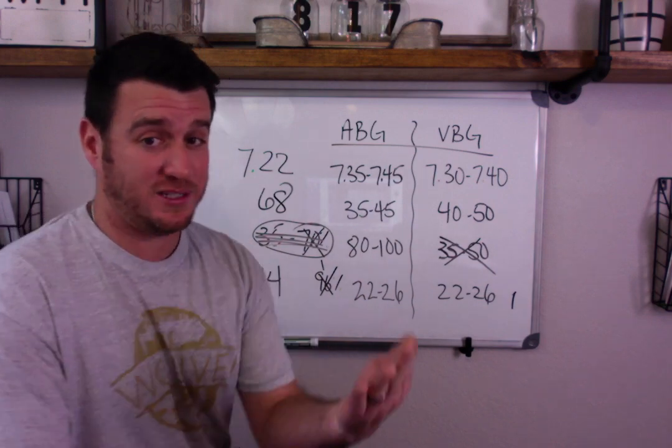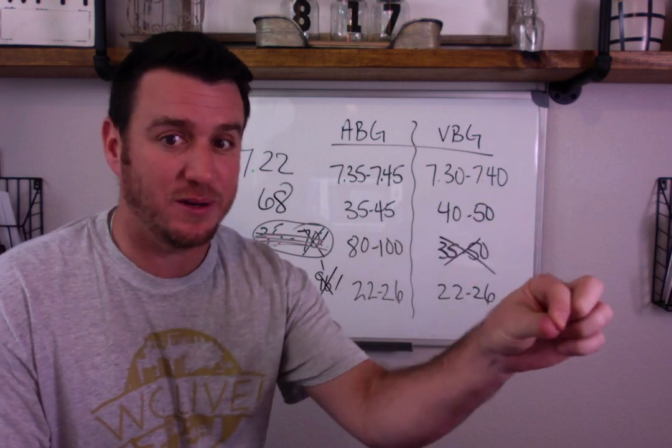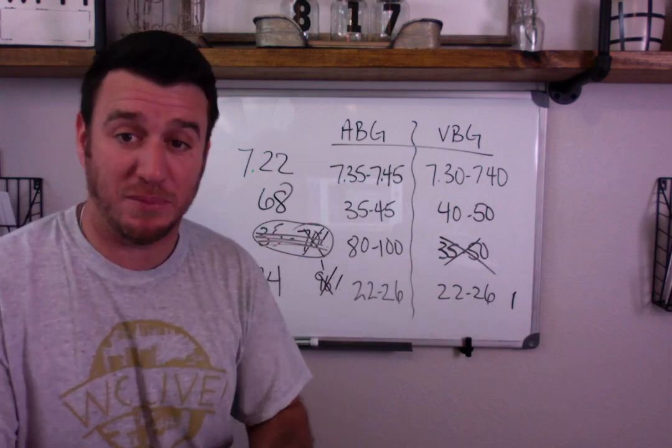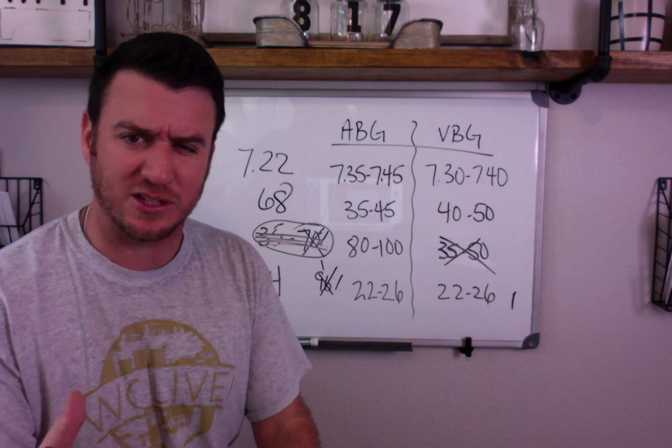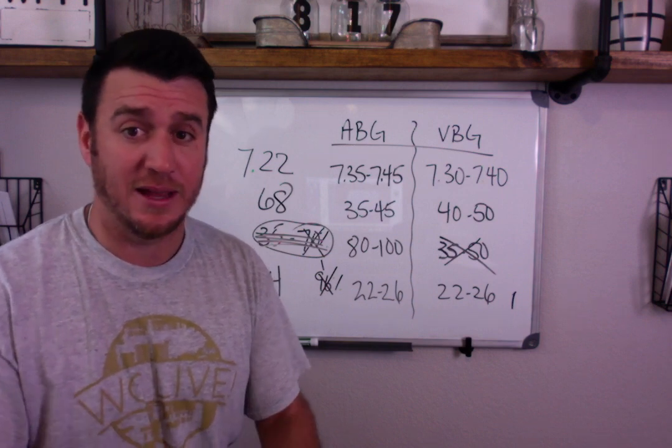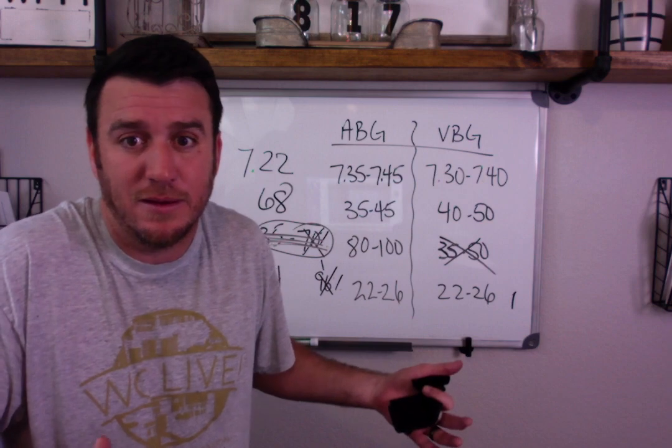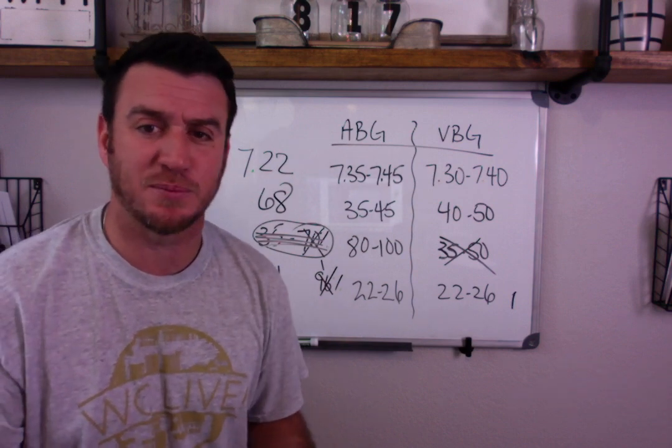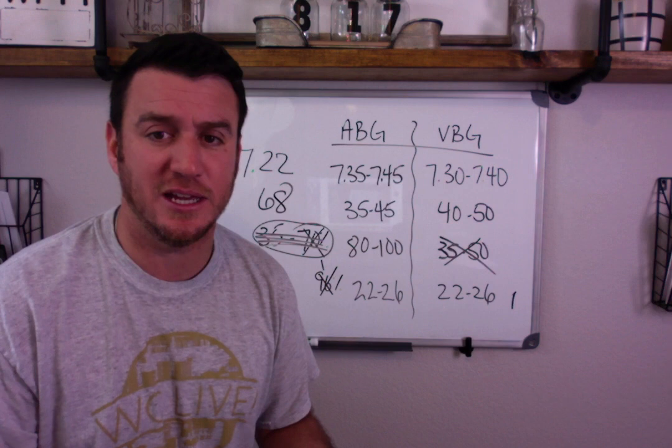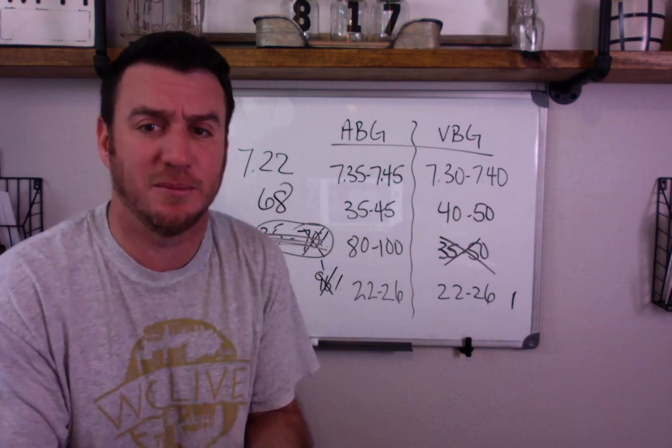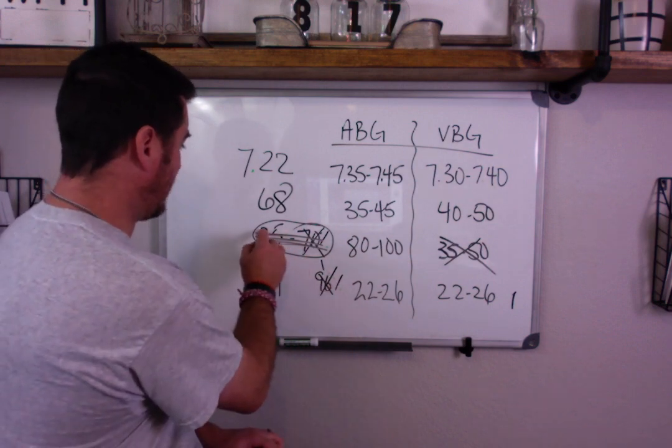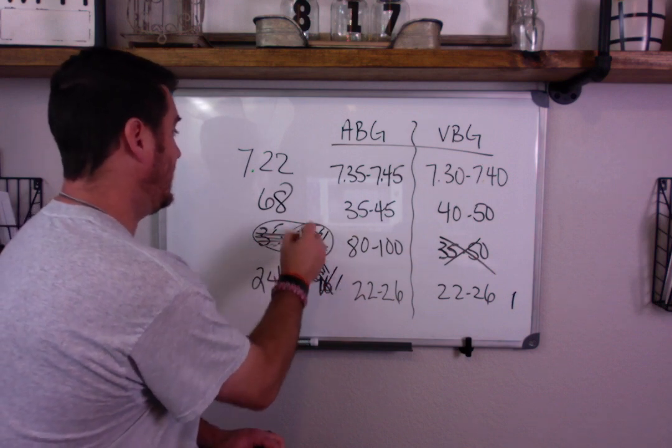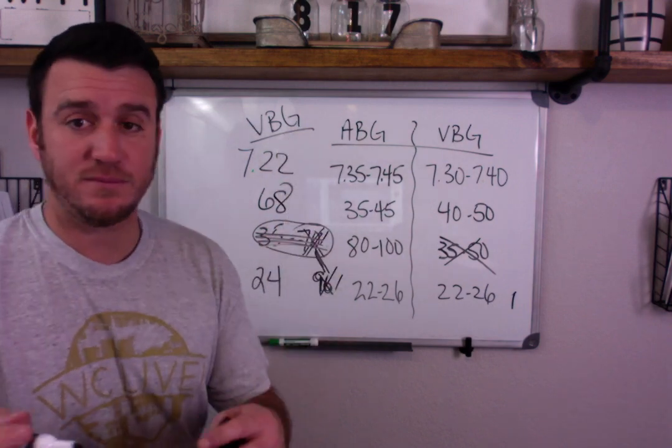When you see this, you go, wait a second, my patient was satting 96%. So this doesn't match up, which means this has got to be venous blood. You know your patient's sat of 96%, which is a good indication of adequate oxygenation, at least arterial PaO2. Your PaO2 is probably adequate because your SPO2 is 96%. Do you have an oxygenation problem? Probably not. Can your patient be hypoxic? Maybe.